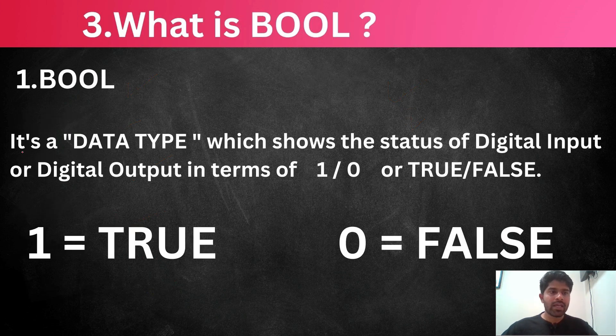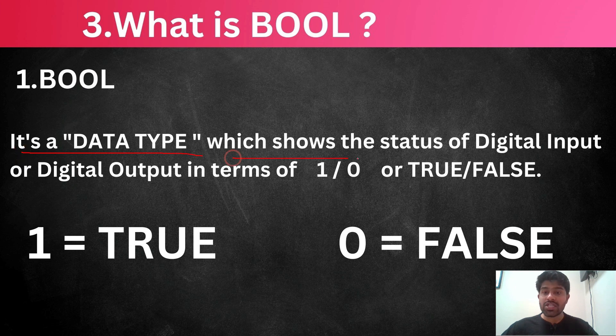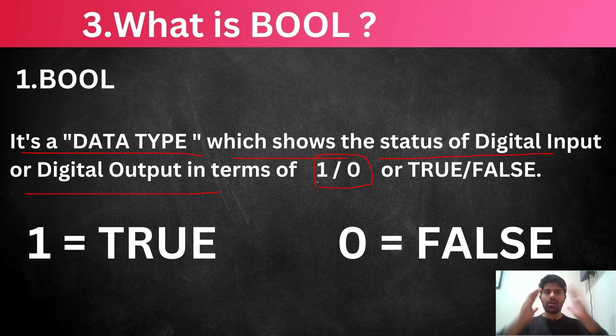So, what is mean by Boolean? It is a data type which shows the status of a digital input and digital output in terms of one or zero. Whenever you think about the Boolean, just in your mind, you take it as a true means one, false means zero. That is finished. So, Boolean is nothing but one or zero.